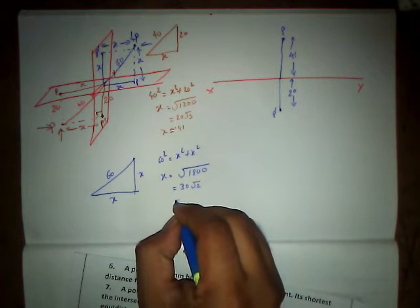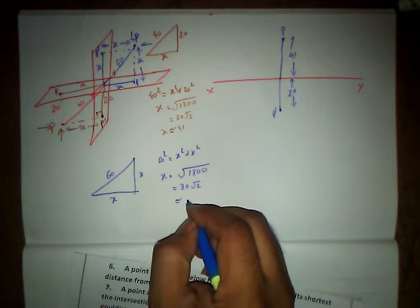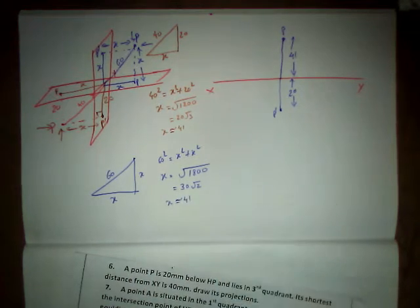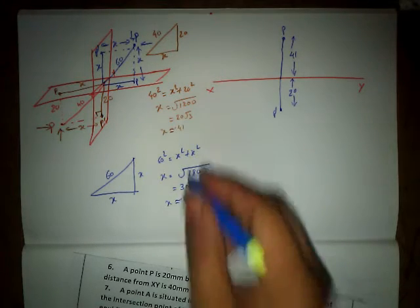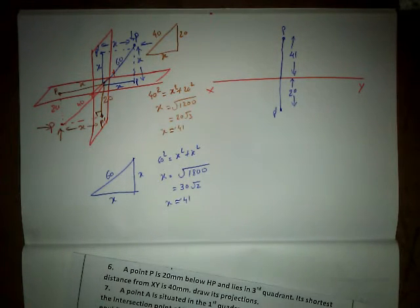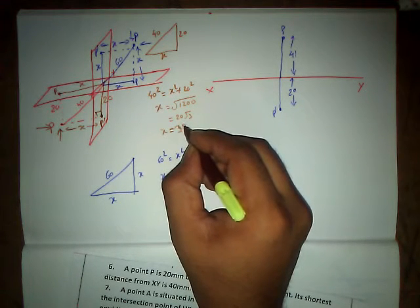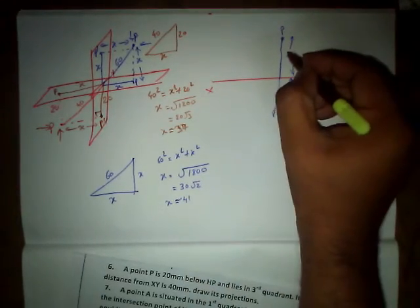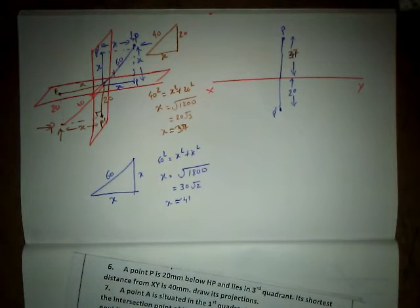Root 2 value is 1.4, so here the value is going to be almost 41. In the previous question it is going to be almost like 38 or 37. Let us consider it as 37 in the previous one - not exactly, we have to calculate.